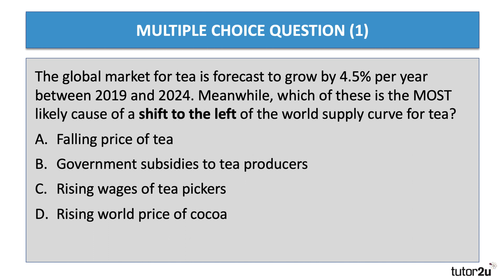The correct answer is C, because tea picking is a very labour-intensive industry in countries like Sri Lanka and Malawi. An increase in wages of tea pickers would increase the supply costs and therefore reduce supply. The falling price of tea causes a movement along the supply curve. Subsidies would reduce costs. Cocoa is a substitute for tea — that would more likely cause a shift in demand.